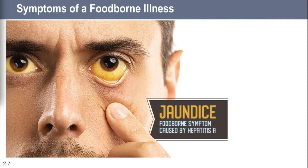There's one last symptom linked to just one illness: jaundice. Jaundice is linked only to Hepatitis A, which is a virus that attacks your liver, giving your eyes and skin a dark yellow tint because your liver isn't working properly. Hepatitis A is very, very common — actually kind of terrifying how common it is.